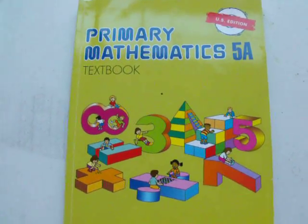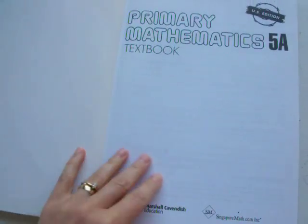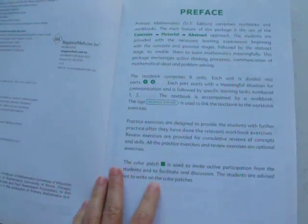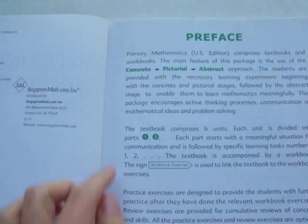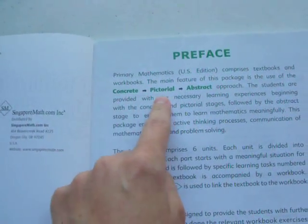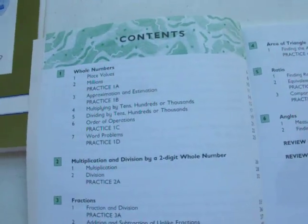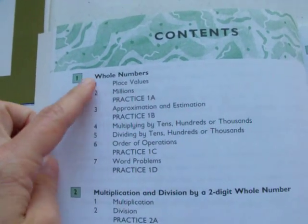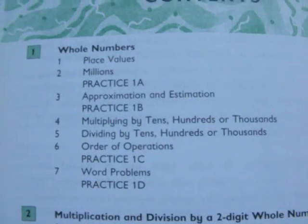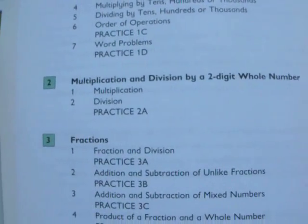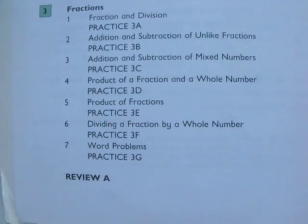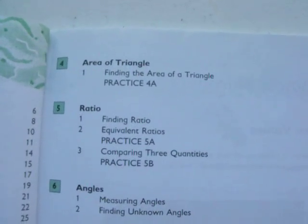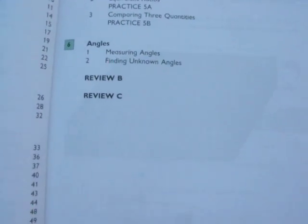And here is the textbook. Singapore teaches from concrete to pictorial to abstract. And here is the table of contents. It's the same thing as the home instructor's guide. It's just not nearly as detailed. You can see unit one, whole numbers, two, multiplication, division, fractions, review, area of triangle, ratio, angles, and more reviews.